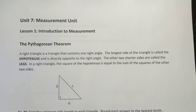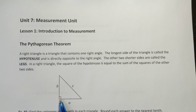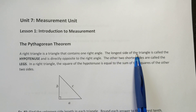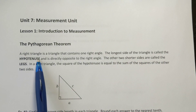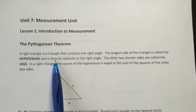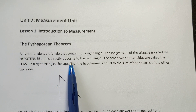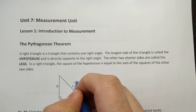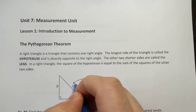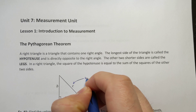A right triangle is a triangle that contains one right angle, so that's an angle at 90 degrees. The longest side of the triangle is called the hypotenuse, and is directly opposite to the right angle. So this right here, this long side, is called the hypotenuse.